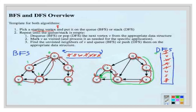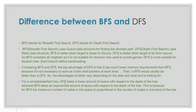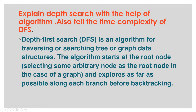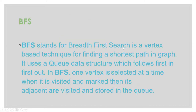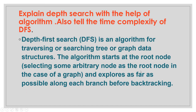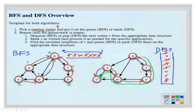So let's talk about the difference between BFS and DFS. BFS stands for breadth first search, which is a vertex-based technique for finding the shortest path in a graph. It uses a queue data structure, but in DFS we use a stack data structure. A queue follows first in first out order. In BFS, one vertex is selected at a time; when it is visited and marked, its adjacent vertices are visited and stored in the queue, but in DFS they are stored in a stack.